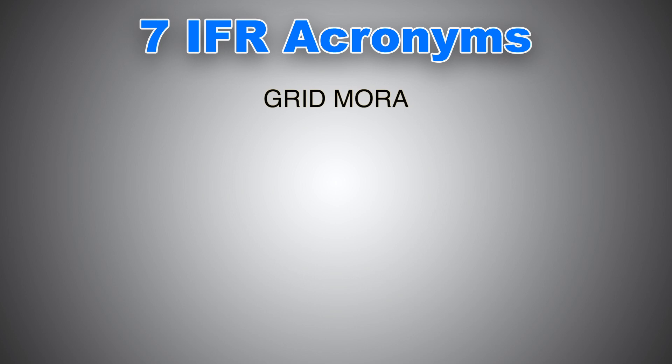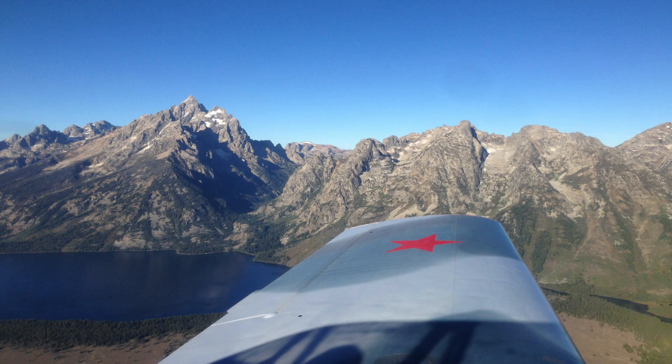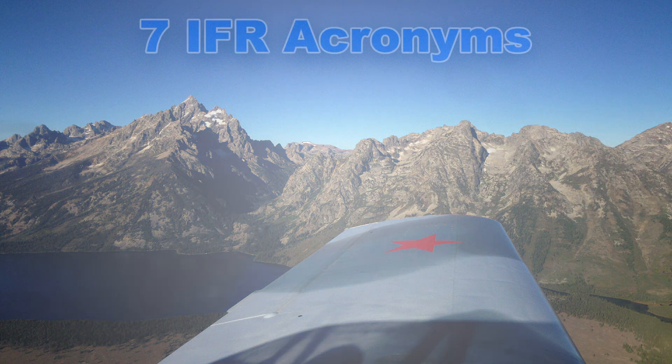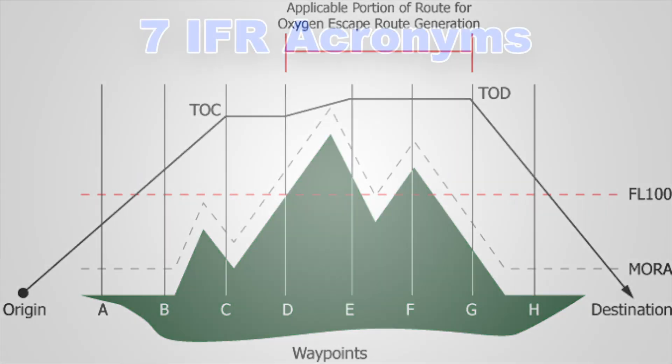Grid MORA may also be referred to as ROCA. This type of altitude is considered an escape route in commercial operations. It is highly desirable that the most direct route between two airports be flown whenever possible. Where that route involves overflight of extensive areas of high terrain, such as the Himalayas, it is critical that escape routes and procedures be developed and used in the event that an emergency requires the aircraft to descend below the minimum obstacle clearance altitude. Grid MORA looks like this on the chart.